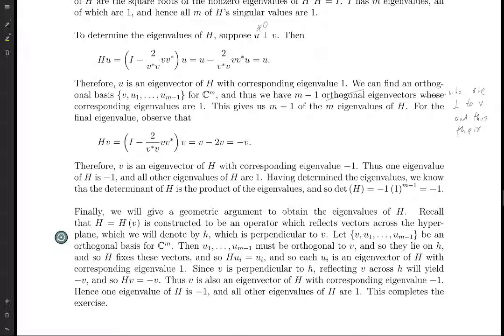So again, if we have V, and then U1 through UM minus 1, being an orthogonal basis for C^M, then these M minus 1 vectors must be orthogonal to V, and so they must all lie on H, because H consists of all vectors which are orthogonal to V,